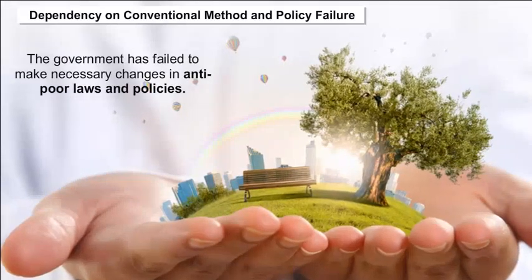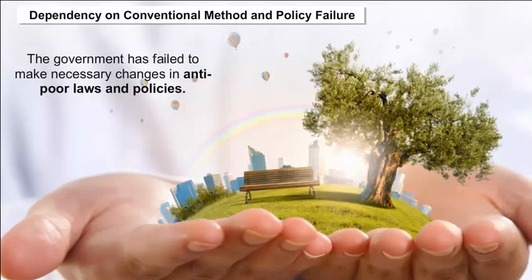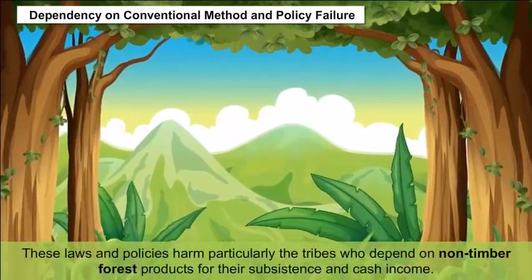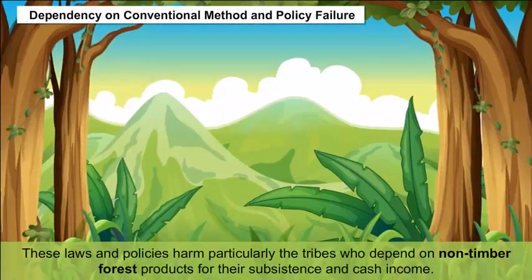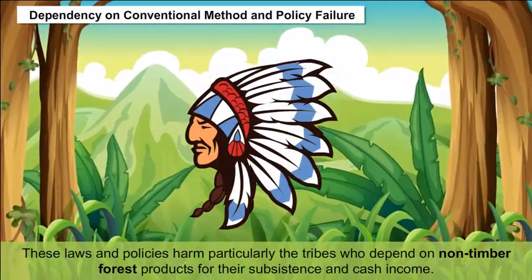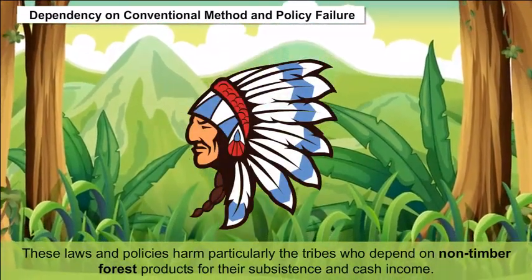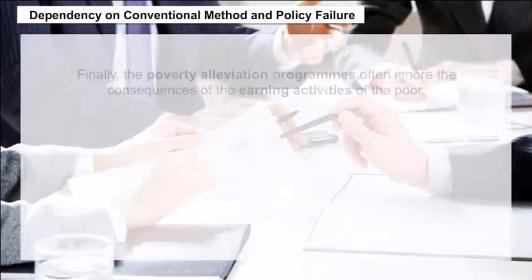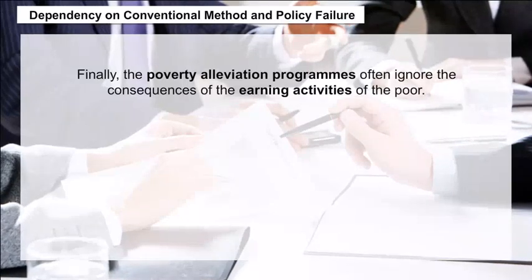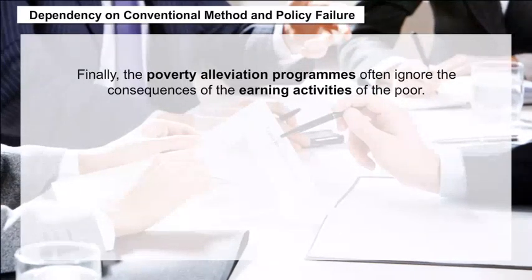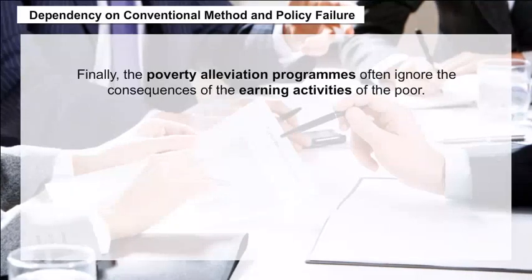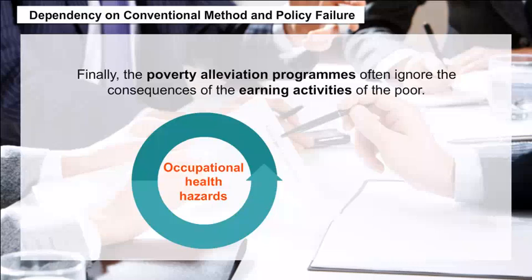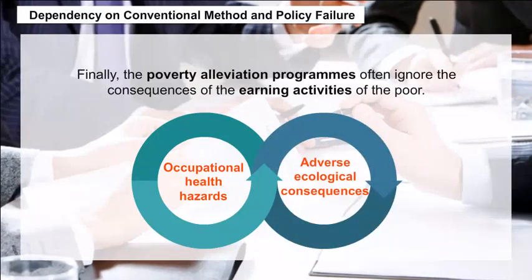The government has failed to make necessary changes in anti-poor laws and policies. These laws and policies harm particularly the tribes who depend on non-timber forest products for their subsistence and cash income. Finally, poverty alleviation programs often ignore the consequences of the earning activities of the poor in terms of occupational health hazards and adverse ecological consequences.